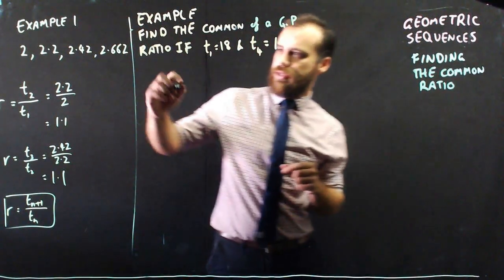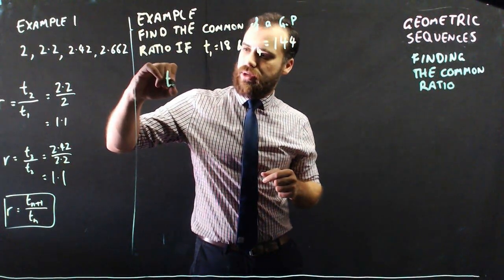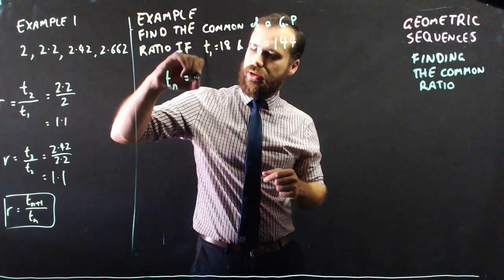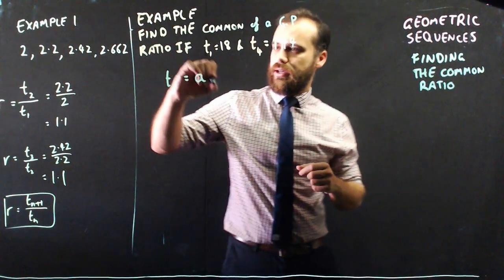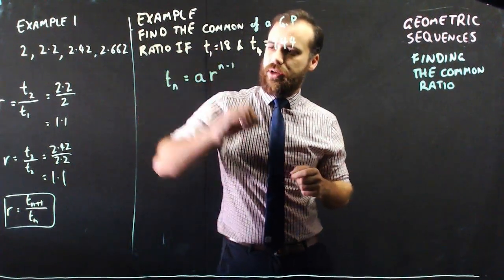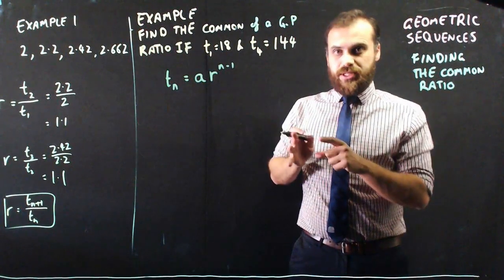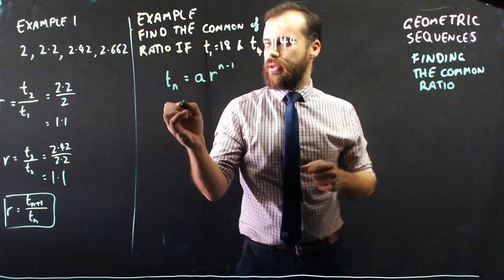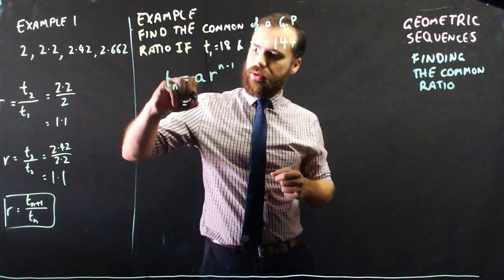Simple. We just use our formula here. We know that term n equals a r to the n minus 1. And we just need to sub in some values here. So I know that term 1 equals 18.